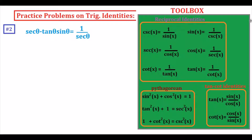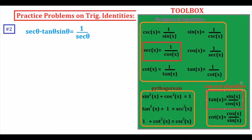Problem number two: we are going to verify that secant theta minus tangent theta times sine theta equals one over secant theta. We are going to express secant theta as one over cosine theta, and tangent theta as sine over cosine.